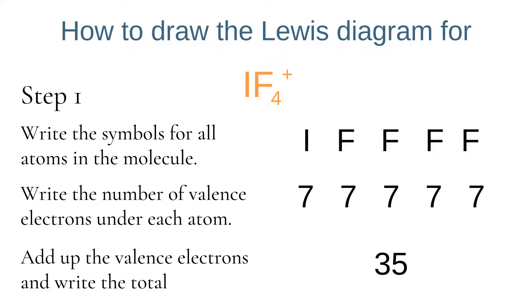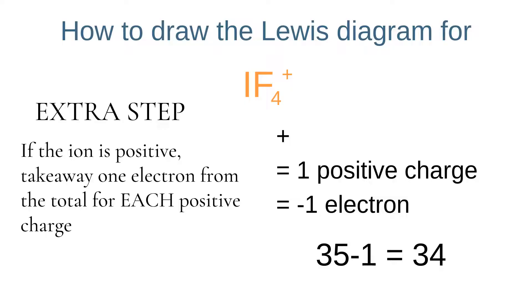For our second example we're going to look at a cation, or positive ion: iodine tetrafluoride. We write the symbols for the atoms involved — 1 iodine and 4 fluorines — and write the number of valence electrons each atom has. In this case all of them have 7 valence electrons, giving a total of 35. Because this is a positive ion we need to take away one electron from the total, so 35 minus 1 is 34 electrons in this polyatomic ion.